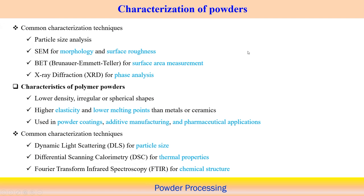Common characterization techniques for ceramic powders include particle size analysis for distribution of particle size and shape; SEM for morphology and surface roughness of particles; BET analysis for surface area measurement; and XRD for phase analysis. These are typical characterization techniques for ceramic particles.